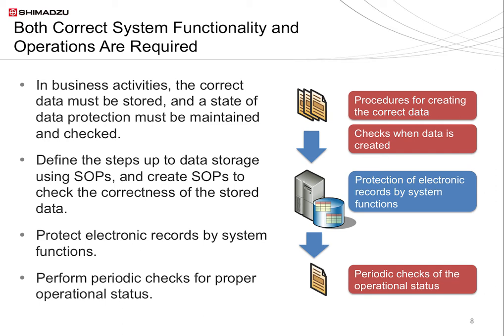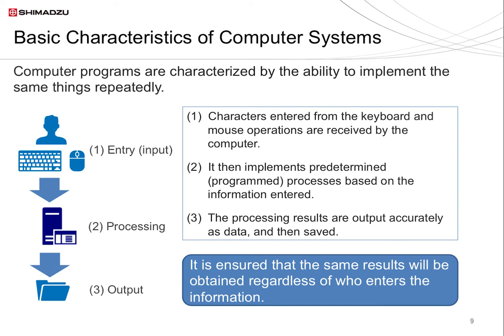The blue areas on this figure are the parts that can be performed by a computer system, while the areas inside red lines are so-called operational areas that absolutely require procedures or an organizational framework for implementation. The image shows how difficult it is to implement everything using only computer systems. So, why can't a computer system guarantee all aspects of data integrity? Computer systems have their own fundamental characteristics — they basically repeat the same tasks and do what you tell them to do. Computers are not yet designed to make independent judgments, though this will probably change in the future with the development of artificial intelligence.